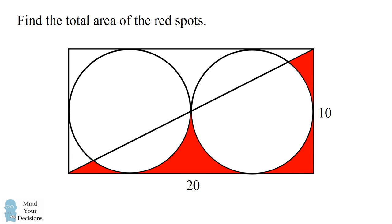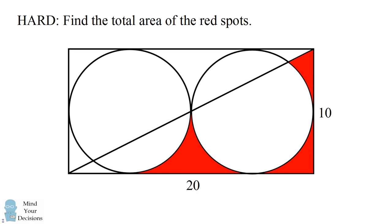which are tangent to each other and tangent to the rectangle. If you can solve this problem, then try this much harder variation. This was supposedly asked to sixth graders in China. Can you now find the total area of the red spots?